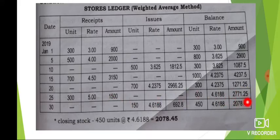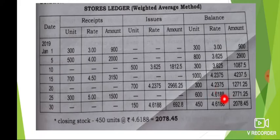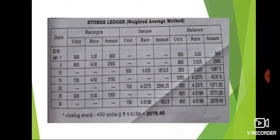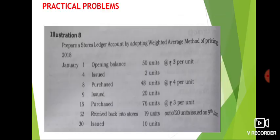The value equals 4.6188. If you have a closing balance, this is 480 units at 4.61, giving 2.78 in value. If you have any points here, just take the amount and unit total. Then the amount divided by unit gives the weighted average rate.